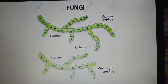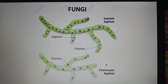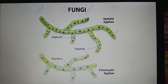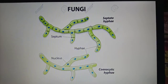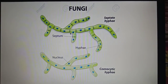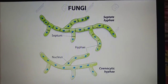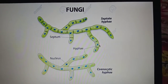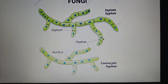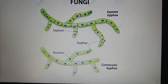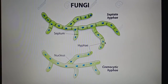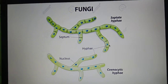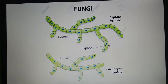So there are two types of hyphae: septate hyphae, which are bounded by septa at regular intervals and are uninucleated; and aseptate hyphae, which are multinucleate and therefore termed coenocytic in nature.